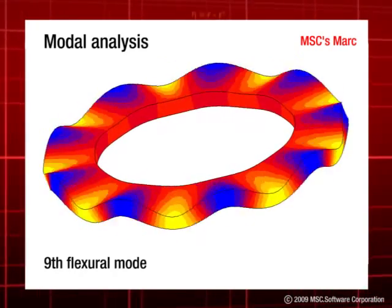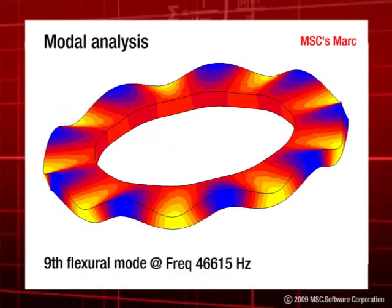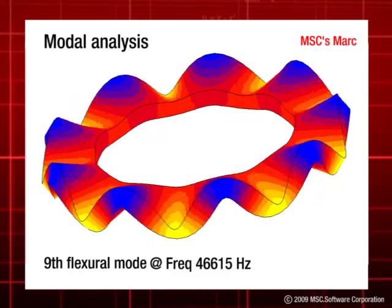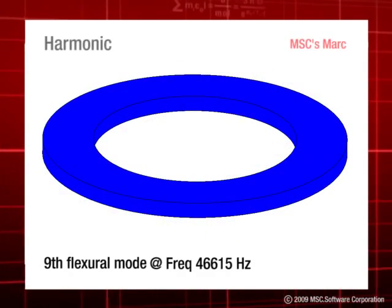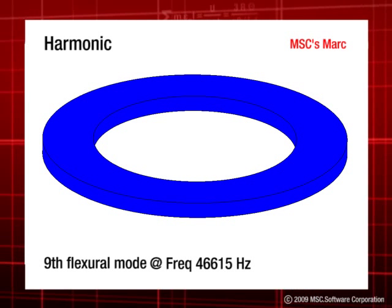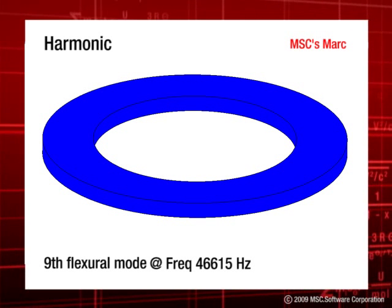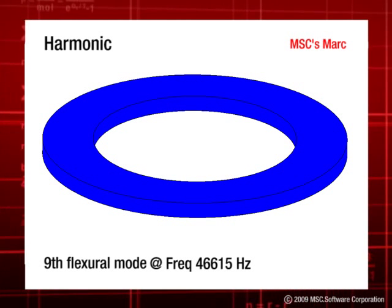which is found to be at a frequency of 46,615 Hz. We next need to verify that a traveling wave will occur when the stator is excited at the two electrodes at the right frequency and with a phase difference of 90 degrees.